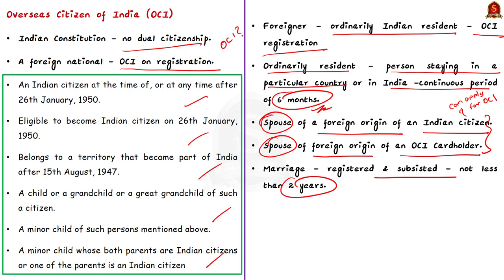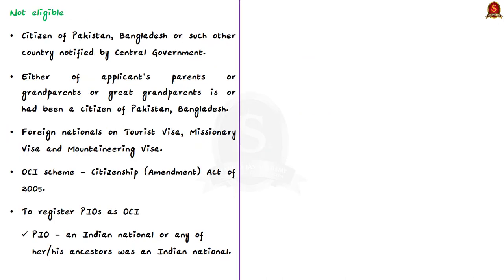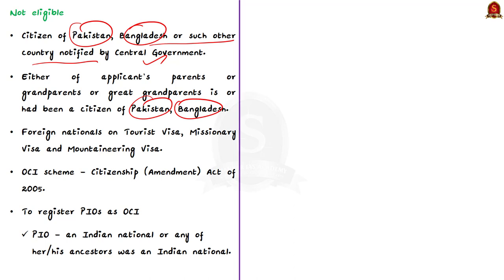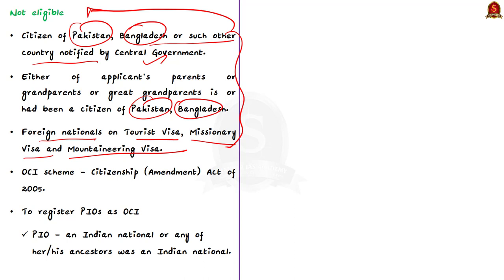Those not eligible for an OCI card include: firstly, a person who is a citizen of Pakistan, Bangladesh, or other such countries mentioned by the central government; secondly, if either of the applicant's parents, grandparents, or great-grandparents is or had been a citizen of Pakistan, Bangladesh, or any other such country mentioned by the central government; and thirdly, foreign nationals on tourist visa, missionary visa, and mountaineering visa.